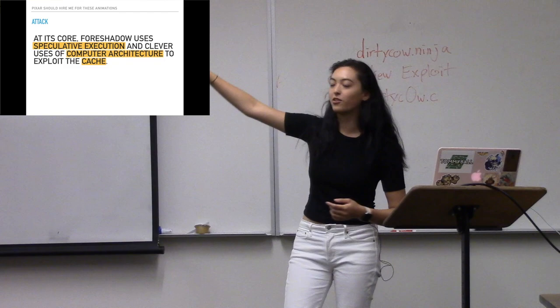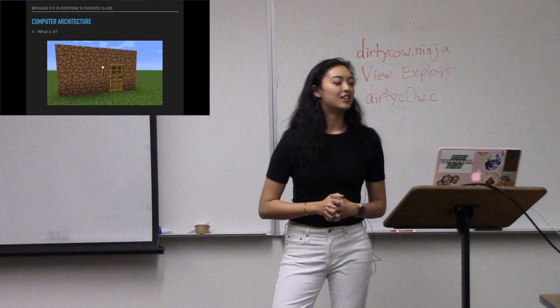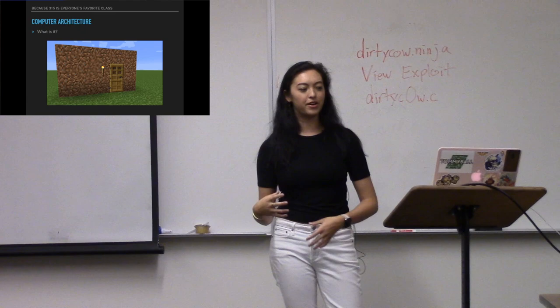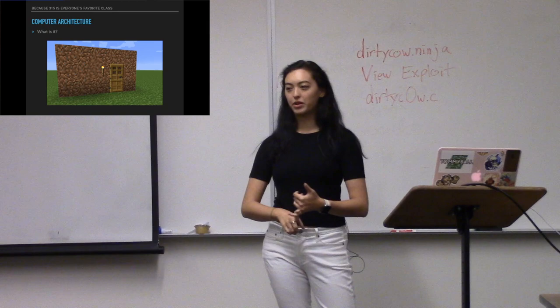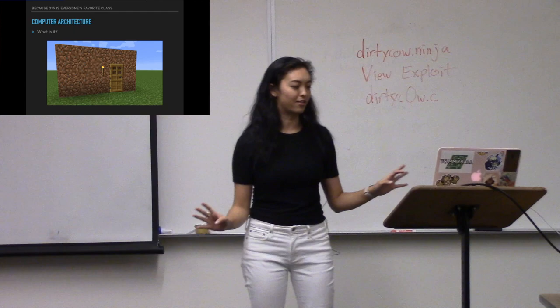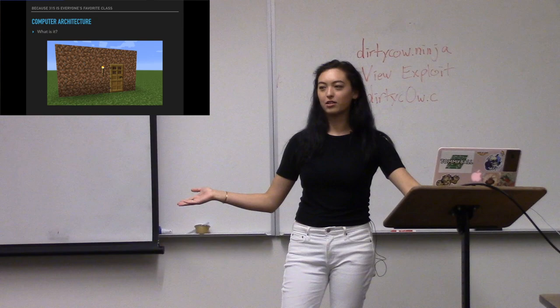Computer architecture is basically how computers do what they do — the way things are structured. It's kind of low level. A lot of people haven't taken 225 or more likely 315 yet. 315 is computer architecture. There's also grad architecture and other stuff if you're EE or CPE. So there are other places you can learn about it.